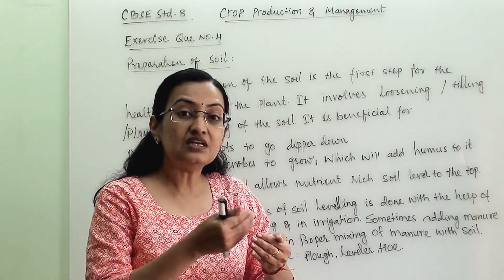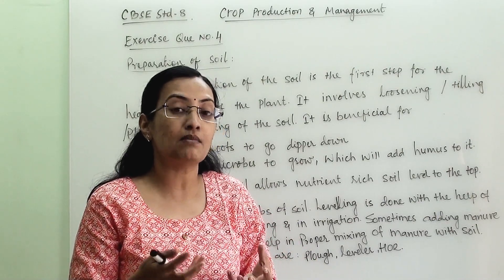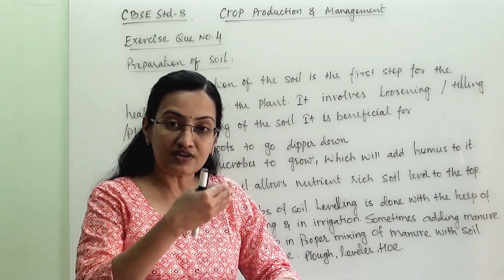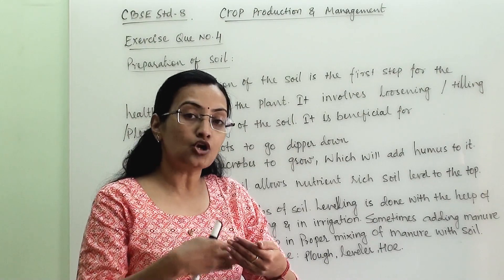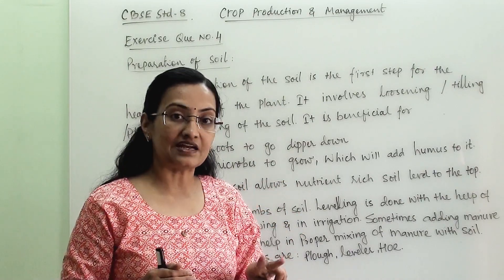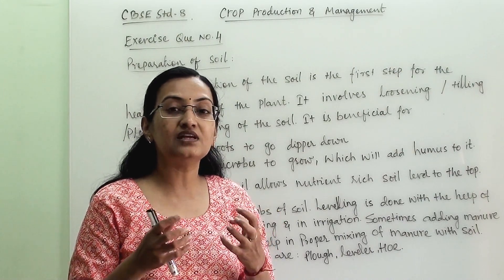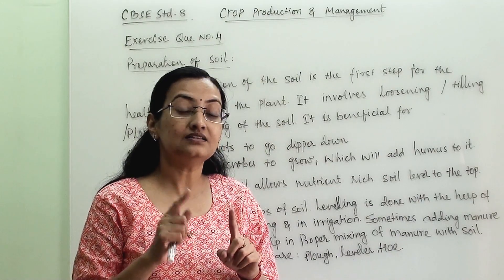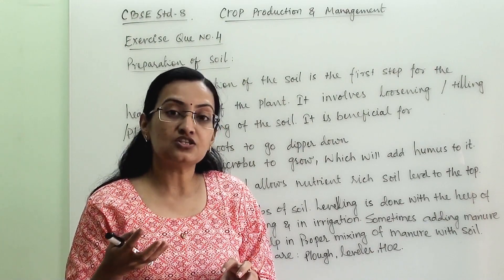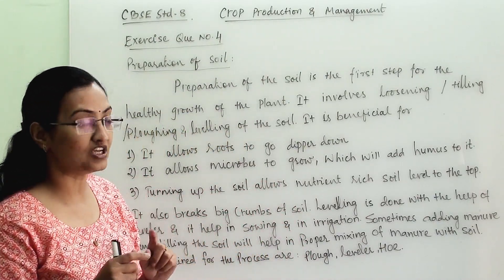Beneath the top layer, there is a level of soil where organic matter is present. All the dead and decaying matter lies there, and it is very beneficial for the healthy growth of plants. When we mix this second layer with the top layer, we bring the nutrient-rich level to the top. Loosening the soil also helps in germination of the seed, providing proper aeration to seeds, earthworms, and all the microbes present in the soil.